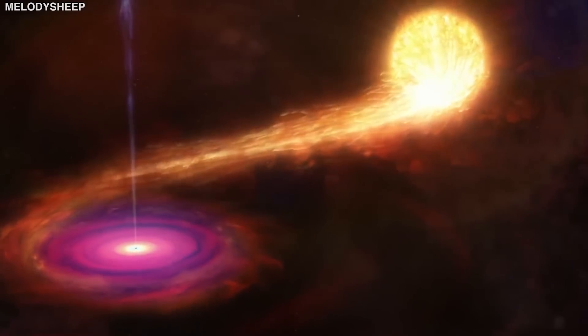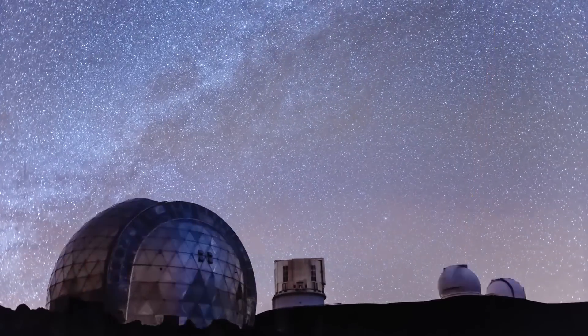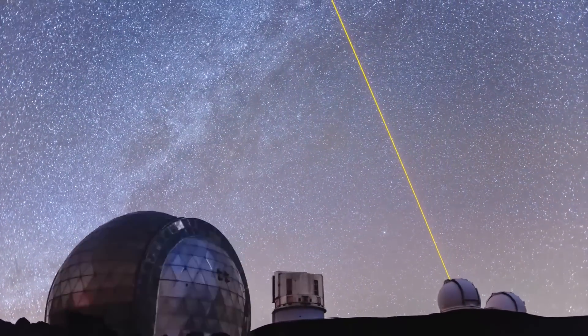When a black hole and a star are orbiting close together, high-energy light is produced. Scientific instruments can see this high-energy light.